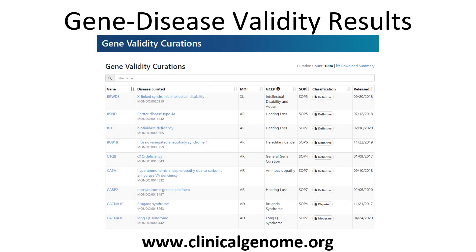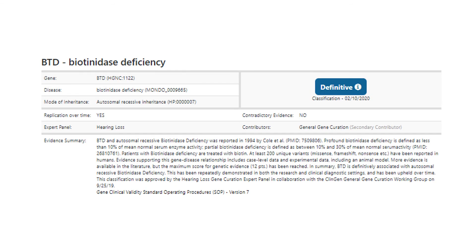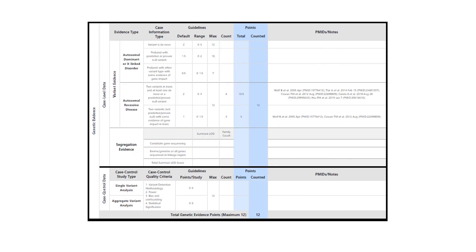ClinGen gene disease validity results are available through our website, as shown here. Each gene disease pair has a PDF document that displays an evidence summary, as well as scores across the various categories and which PMIDs were used as evidence. Additional detail, such as summaries of the particular papers, is forthcoming.